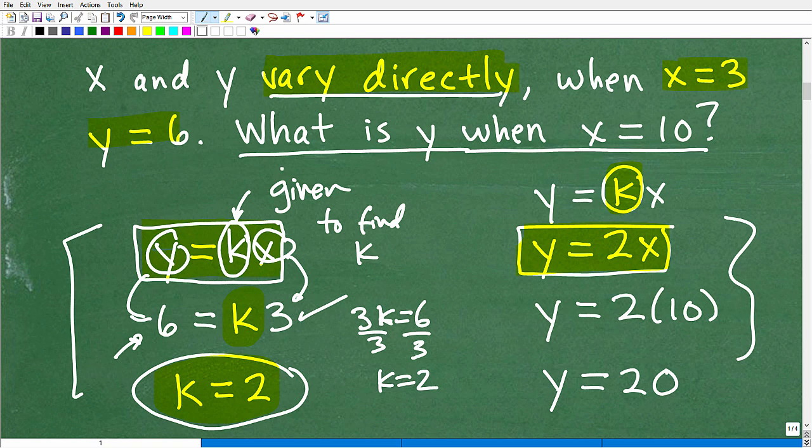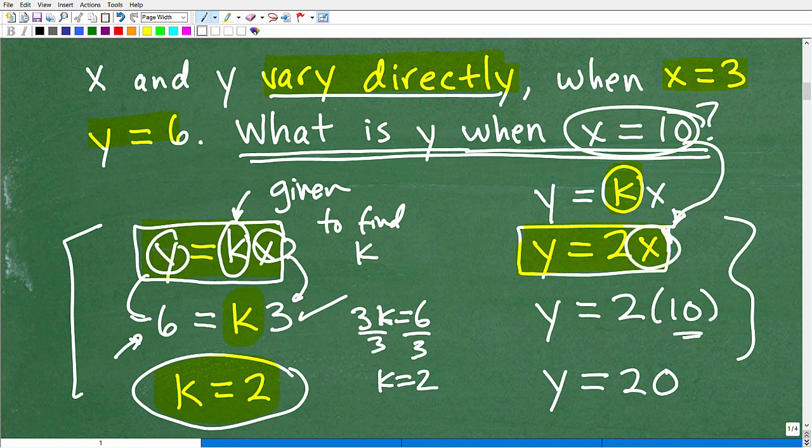So now I can get to this second half of what I need to do. And that is the actual question. What is y when x is equal to 10? It doesn't get any easier than that. All I have to do in my specific formula here is plug in 10 for x. Okay. So I want to replace this x with 10. And then 2 times 10 gives me y is equal to 20.